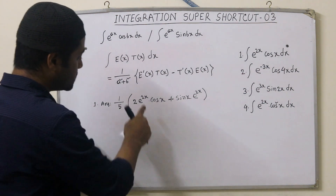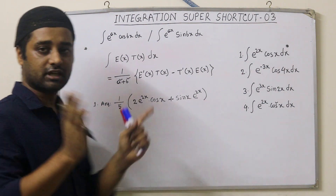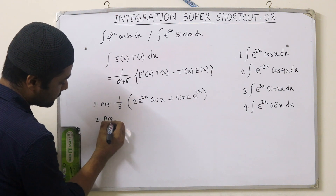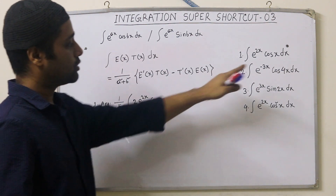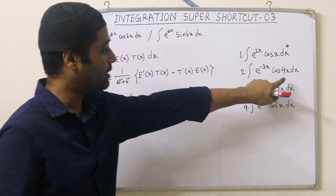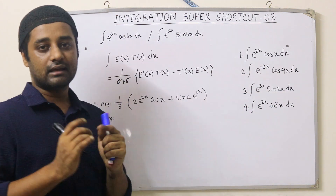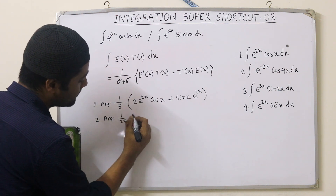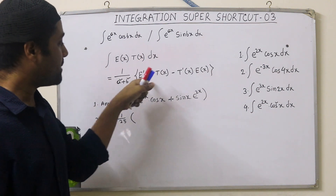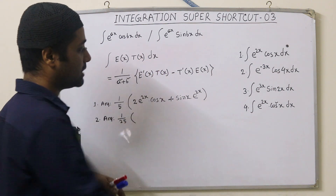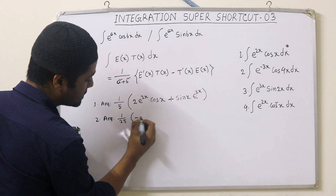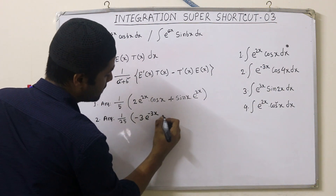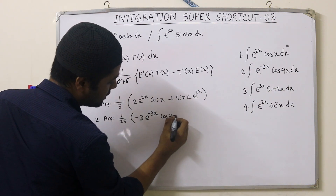So the answer is e to the power 2x. We get a = 3, b = 2, so 1 by a² + b² equals 1 by 13, into e^(3x) — we differentiate the e function: differentiation of e^(3x) gives minus 3·e^(−3x), into cos 4x.